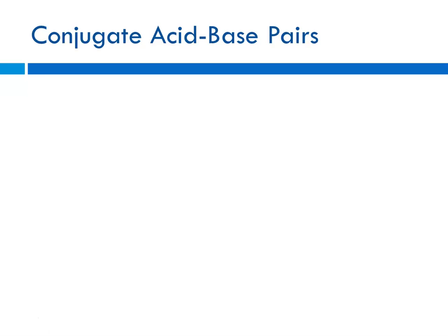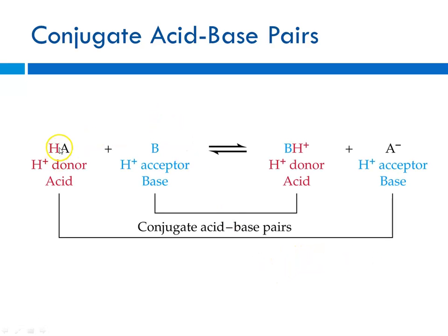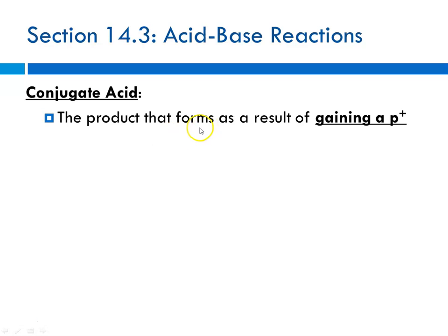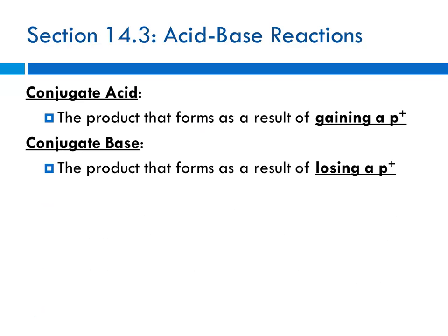Now we have to talk about conjugate acid-base pairs. When talking about the Bronsted-Lowry definition, the H-plus or proton donor is the acid, and the proton acceptor is the base. When the acid loses its H-plus, it forms a conjugate base, and the base accepts the proton and forms a conjugate acid. A conjugate acid is the product that forms as a result of gaining the proton, and the conjugate base is the product that forms as a result of losing the proton.